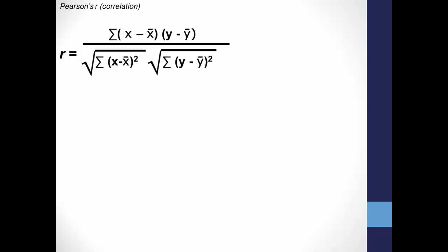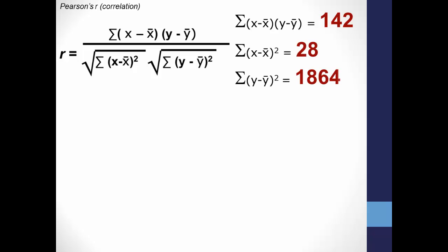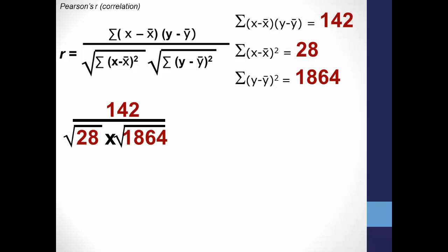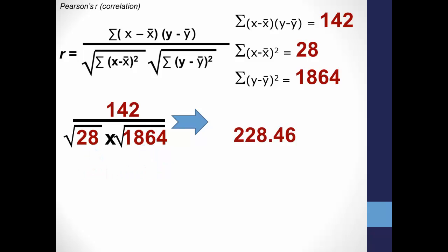Now it's time to finish off the formula. We have the sum of (x minus mean of x) times (y minus mean of y), which is 142. We've also calculated the sum of each score minus the mean, squared, for both x and y. Plugging that into the equation: 142 divided by the product of the square roots of 28 and 1864, which is 5.29 times 43.17, or 226.46. Reducing that down becomes 142 divided by 228.46, and finally r equals 0.62.